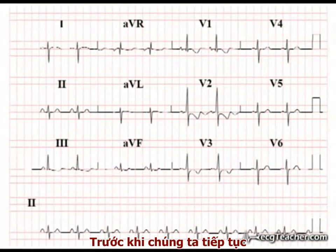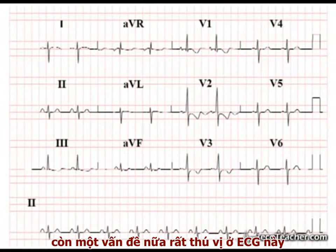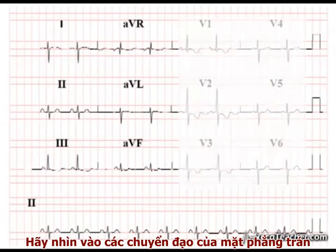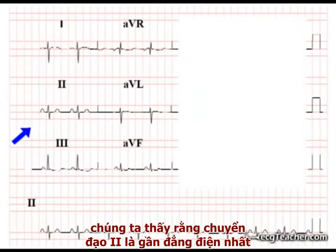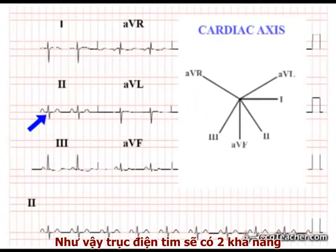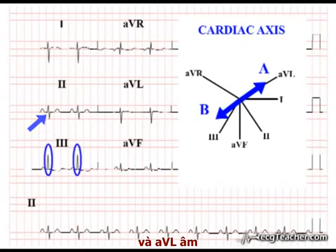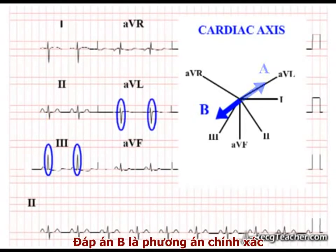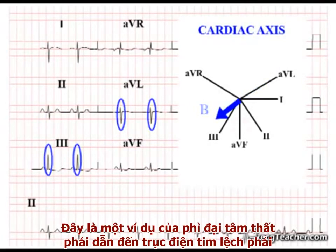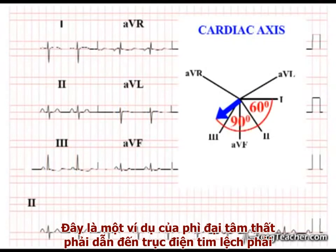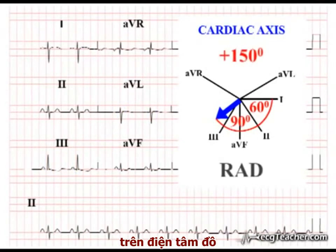Before we move on, there is at least one further feature of interest on this ECG. Looking at the frontal leads, we note that lead 2 is isoelectric, giving two possible cardiac axes at right angles to this lead. As lead 3 is strongly positive and AVL negative, option B must be correct. This is an example of RVH resulting in right axis deviation on the ECG.